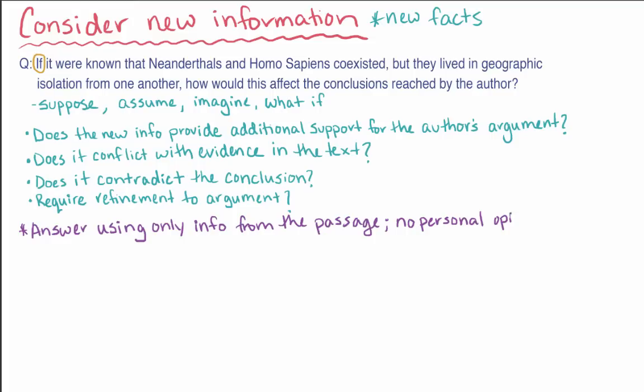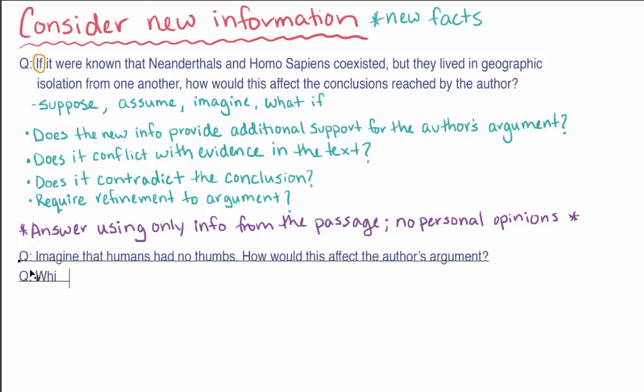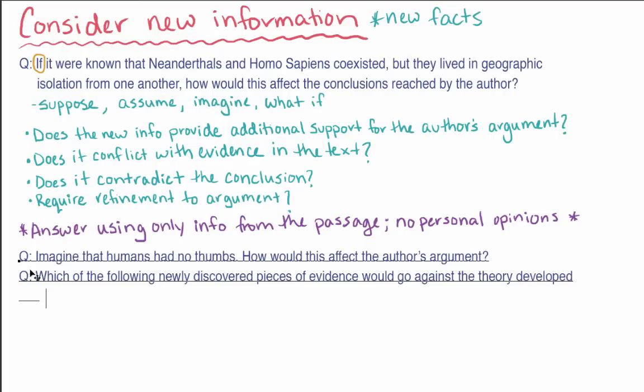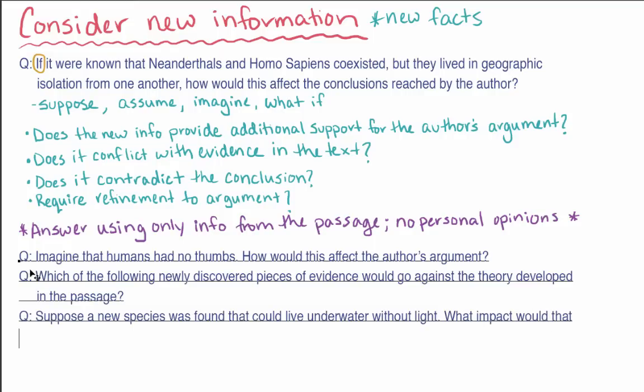Here are some other examples of these types of questions. Imagine that humans had no thumbs. How would this affect the author's argument? Which of the following newly discovered pieces of evidence would go against the theory developed in the passage? Suppose a new species was found that could live underwater without light. What impact would that have on the definition of life proposed by the author?